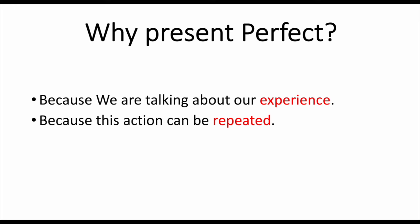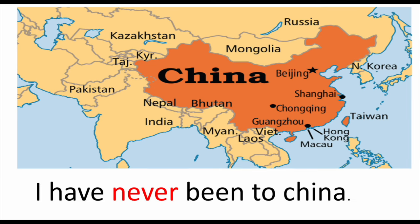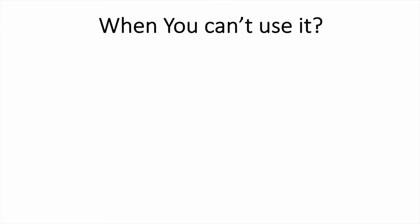We use present perfect because we are talking about our experience and the action can be repeated again. Did you see China in those pictures? No, you didn't. Negative form: 'I have never been to China.' This is one of the versions you can say in negative form.